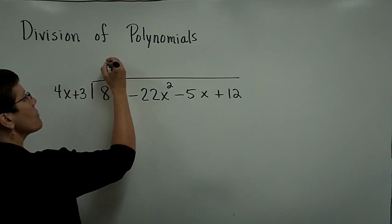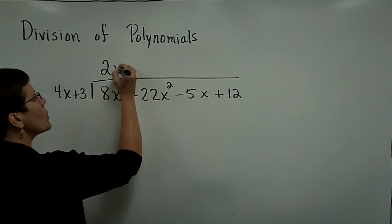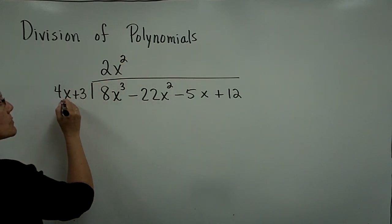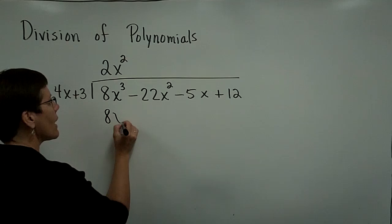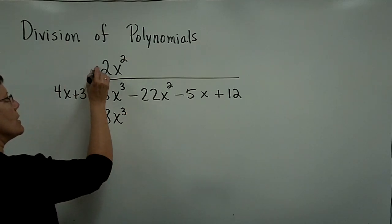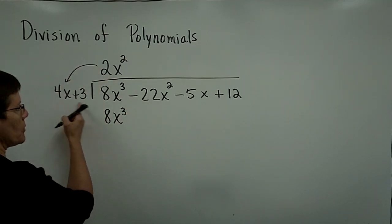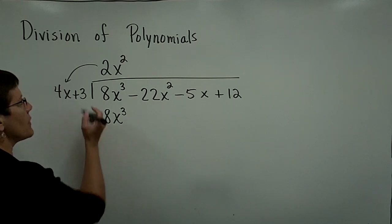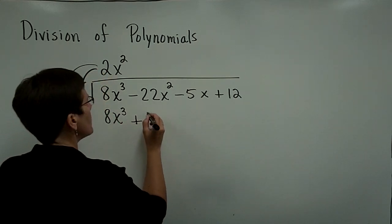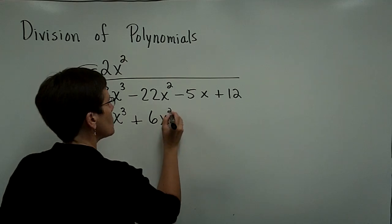I need the term 2x squared up here, because 2x squared times 4x is 8x cubed, exactly. So this multiplies by the first term in this binomial to get that. The 2x squared times 3 is a 6x squared.